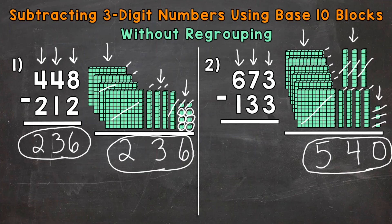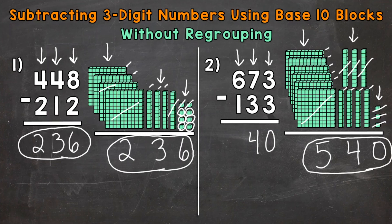Let's solve this to the left as well. Start with the ones: 3 minus 3 gives us 0. Move over to the tens: 7 tens minus 3 tens — so that 7 has a value of 70 and the 3 has a value of 30 — so 7 tens minus 3 tens gives us 4 tens. And then lastly the hundreds: 6 hundreds, which has a value of 600, minus 100, which has a value of 100 — 6 minus 1 gives us a 5 in the hundreds place. So 540 over there as well.